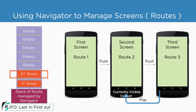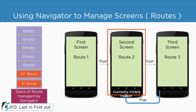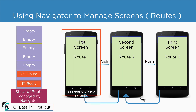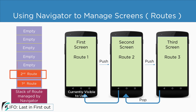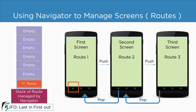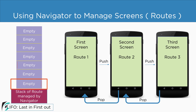The third route will be removed from the stack and route two will be visible to the user. Similarly, if the user presses the back button again, they will be navigated to route one and route two will be removed from the stack, making route one on top. Finally, if the user presses the back button once more, the stack will be empty and the user will be navigated to the home screen of their Android or iOS device.